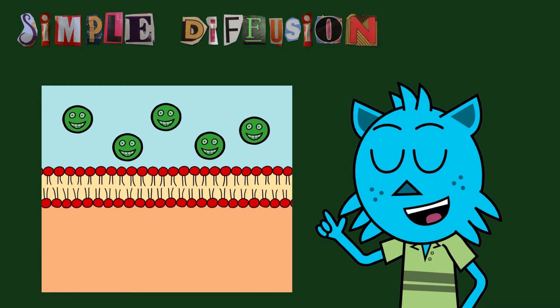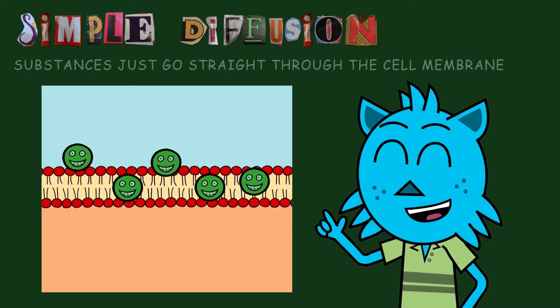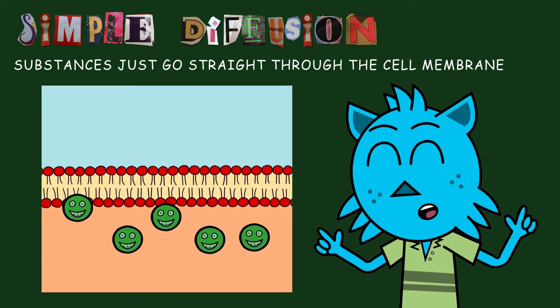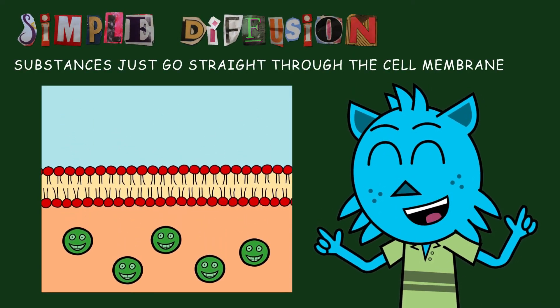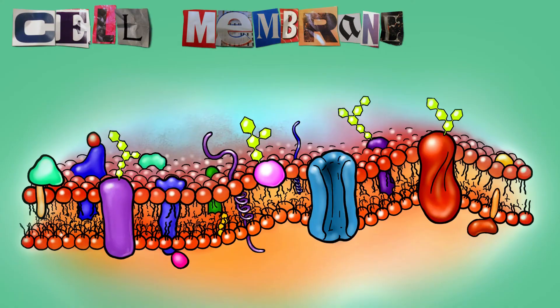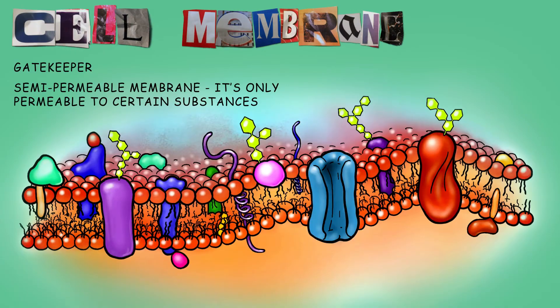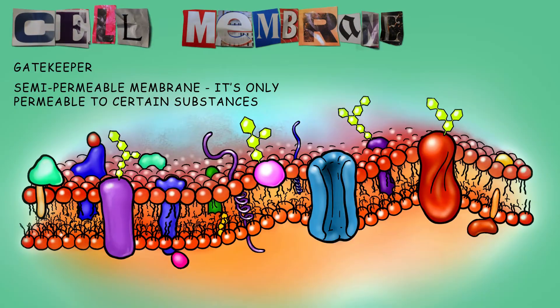In simple diffusion, substances just go straight through the cell membrane. The cell membrane is a gatekeeper — it's a semi-permeable membrane, which means that it is only permeable to certain substances.